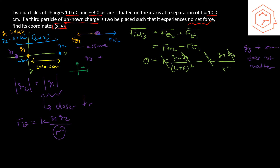Let's verify why q3's sign doesn't matter: if q3 is positive, it repels from q1 and attracts to q2. If q3 is negative, it repels from q2 and attracts towards q1. In both cases, we have the potential for the forces to cancel out.